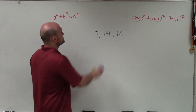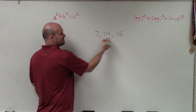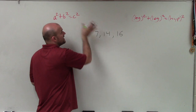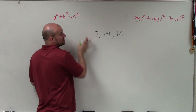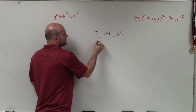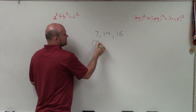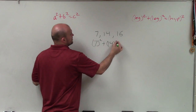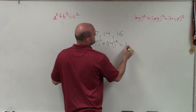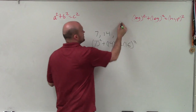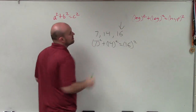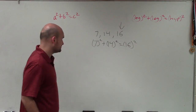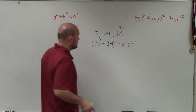So here are the sides of a triangle. To determine if it's a right triangle, the Pythagorean Theorem has to work. Therefore, leg squared plus leg squared equals hypotenuse squared. Remember, the largest number is always going to be your hypotenuse of the right triangle.